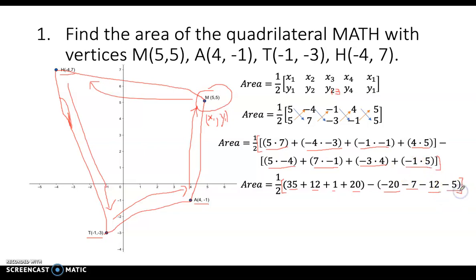Performing the indicated operation: 35 plus 12 is 47, plus 1 is 48, plus 20, that would be 68, minus negative 20 minus 7. Negative 27 plus minus 12, so that would be negative 39.